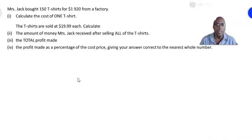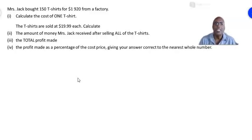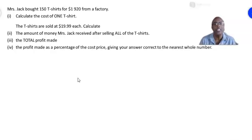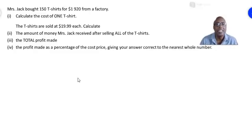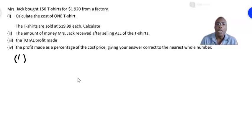Let's look at some examples on profit and loss. This first one is taken from a Caribbean Secondary Education Certificate examination past paper. Mrs. Jack bought 150 t-shirts for $1,920 from a factory. Part one: calculate the cost of one t-shirt.